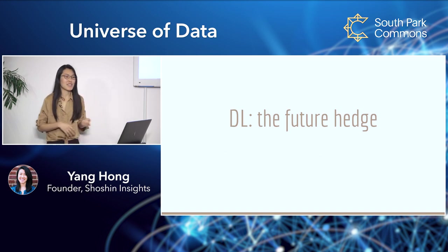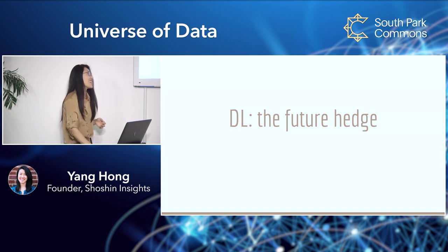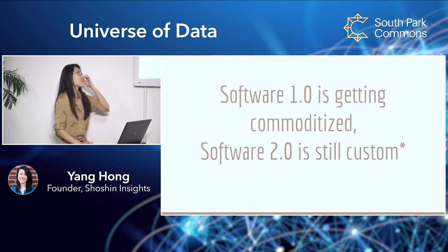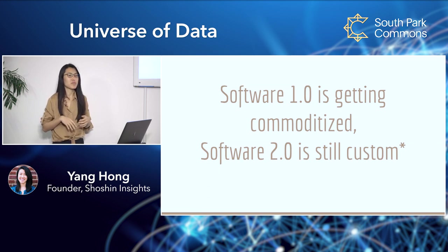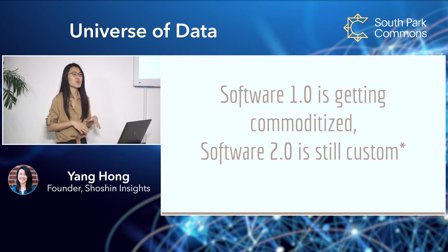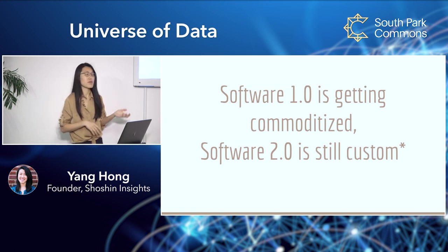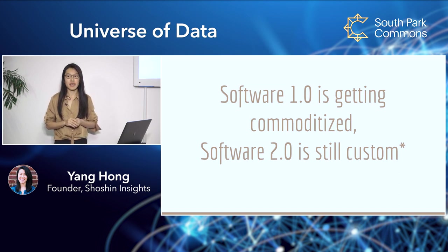I'd call this 'the future hedge' — if you want to be part of the future, hedge some part of your life towards AI, and I suggest looking into deep learning. Andrej Karpathy has this terminology of Software 2.0, which he calls deep learning — kind of like how people were saying 'software is eating the world,' he's making the argument that software 2.0 is eating software 1.0. 2.0 refers to deep learning and our current AI boom. I would also say that 1.0 is getting commoditized — there are tons of sites where if you don't know how to code you can drag and drop and make an app. But 2.0 is still super custom and kind of a wild west.